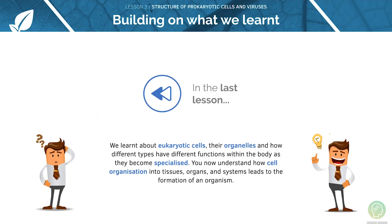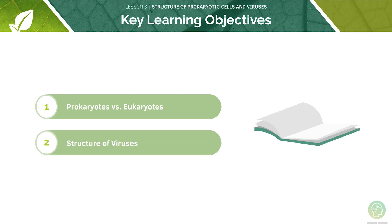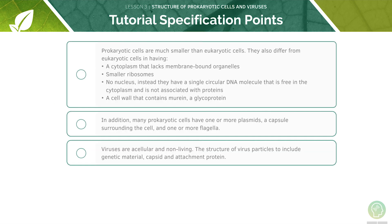In the last lesson we learnt all about eukaryotic cells. Here are the key learning objectives for today's lesson: the first is to look at prokaryotes and eukaryotes, and the second is to look at the structure of viruses. Here are the AQA specification points for this lesson — feel free to pause the video now and have a quick read through them before we begin.